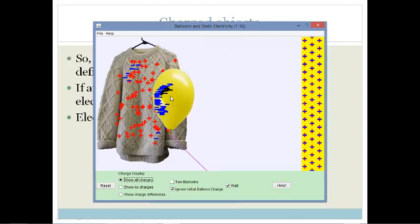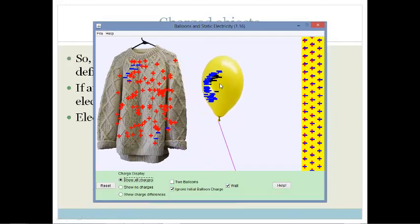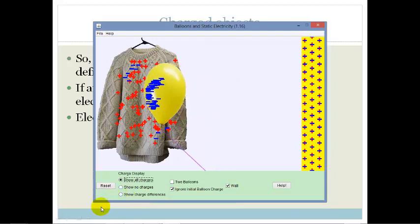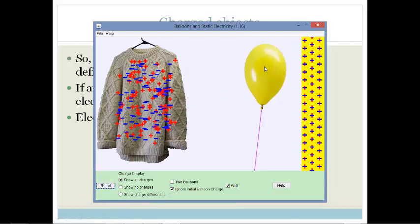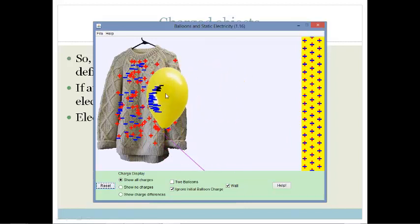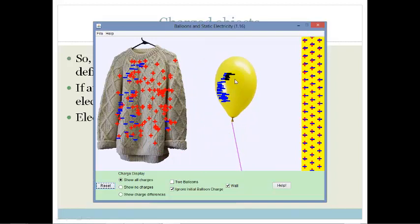I'm going to reset it so we can go through it again. As I bring the balloon closer, the balloon is neutral as well, but it is more positive than the jersey. So when I do the friction, you see that the electrons are being transferred from the jersey to the balloon. Now the jersey is positively charged and the balloon is negatively charged because it's got an excess of electrons.